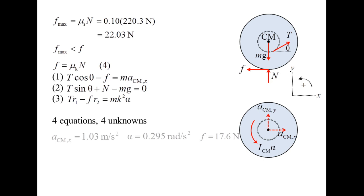The acceleration of the center of mass is 1.03 meters per second squared to the right. The angular acceleration is 0.295 radians per second squared in the counterclockwise direction. The friction force exerted by the ground on the disc is 17.6 newtons to the left.